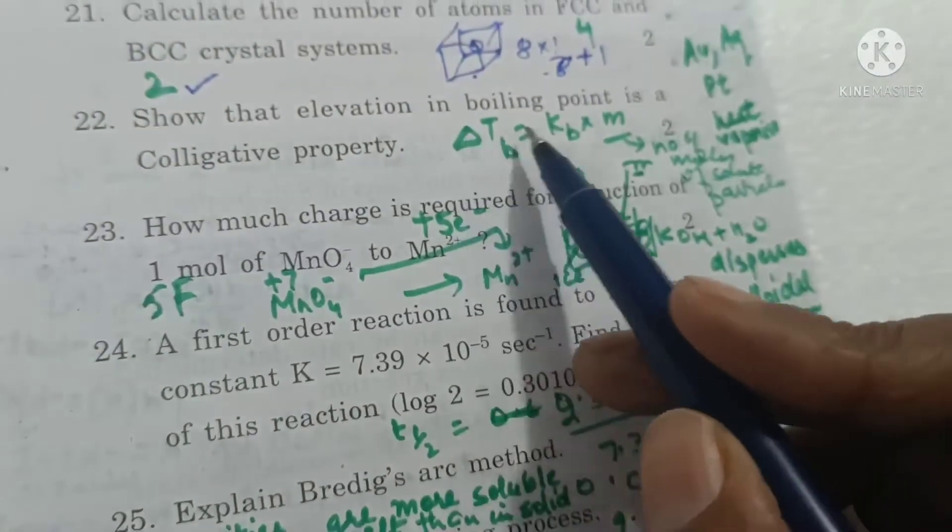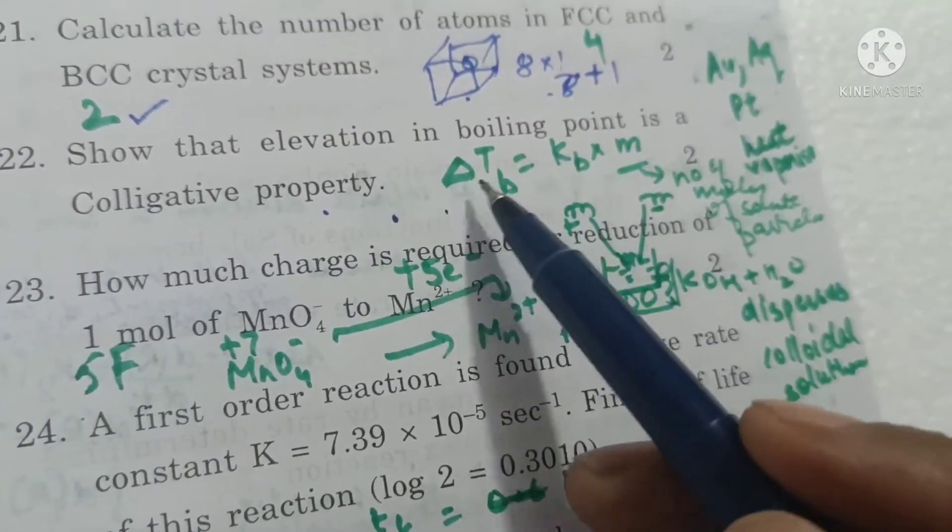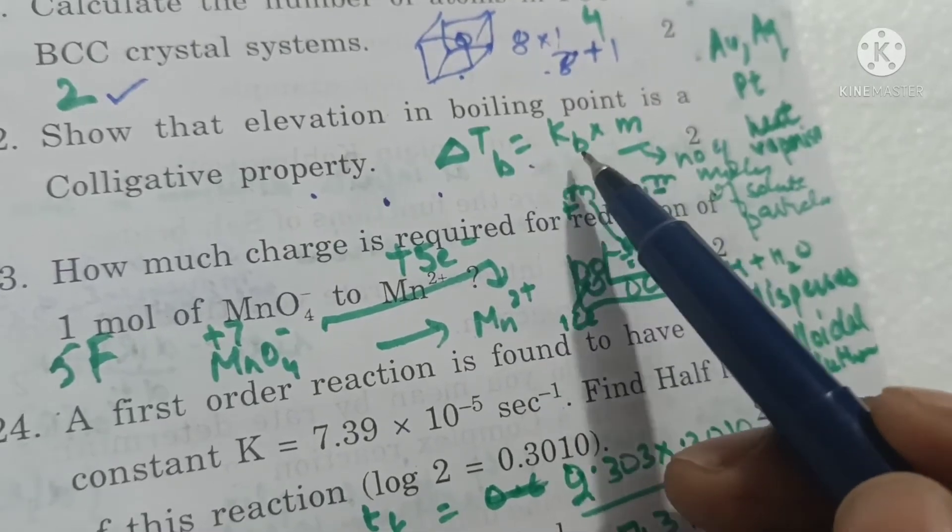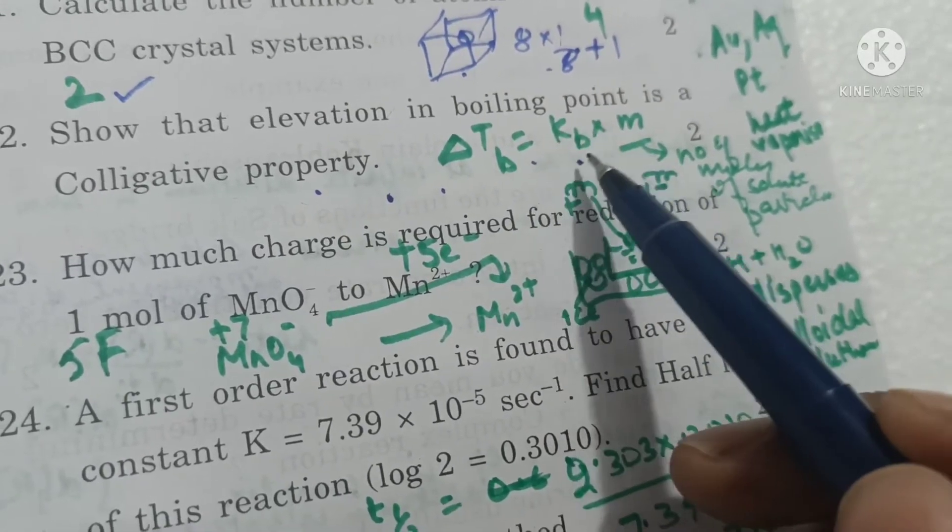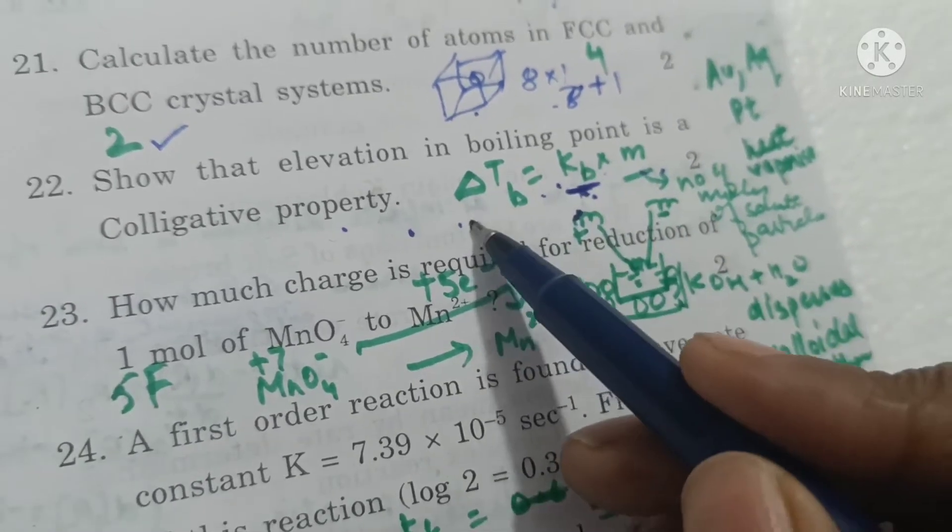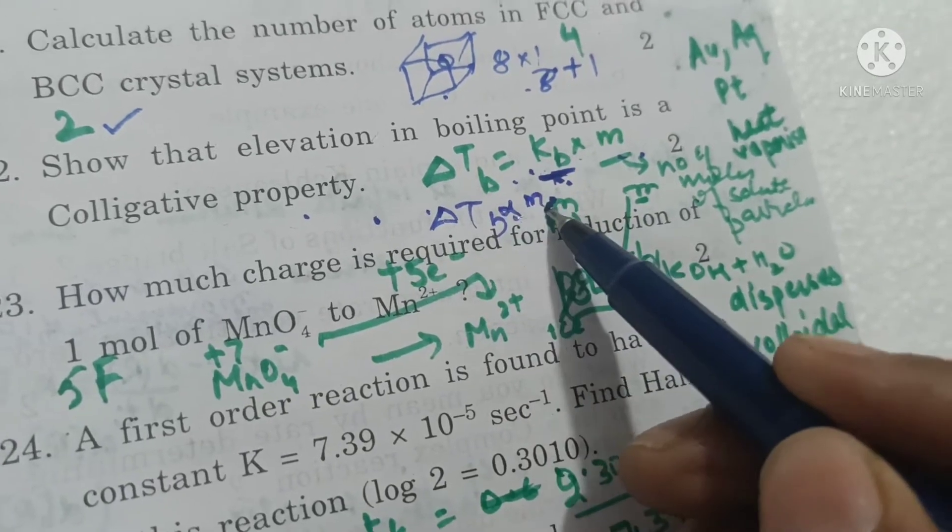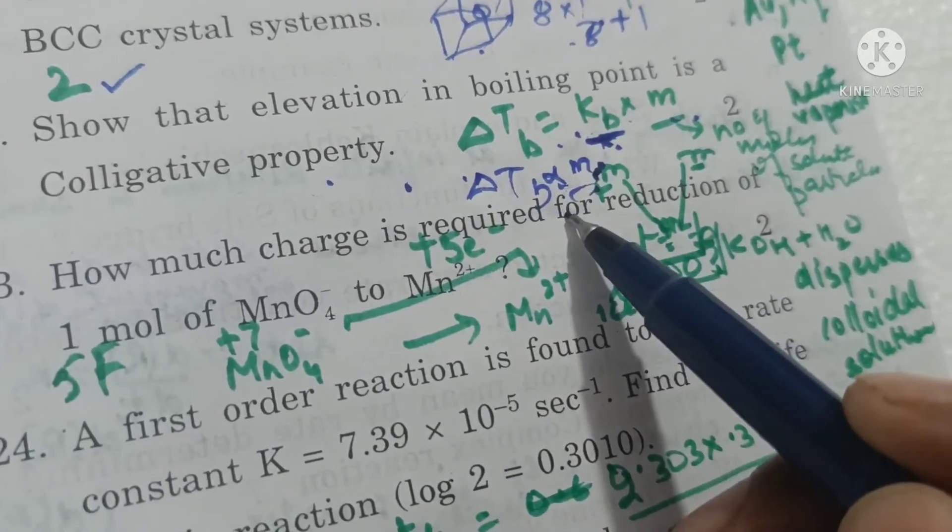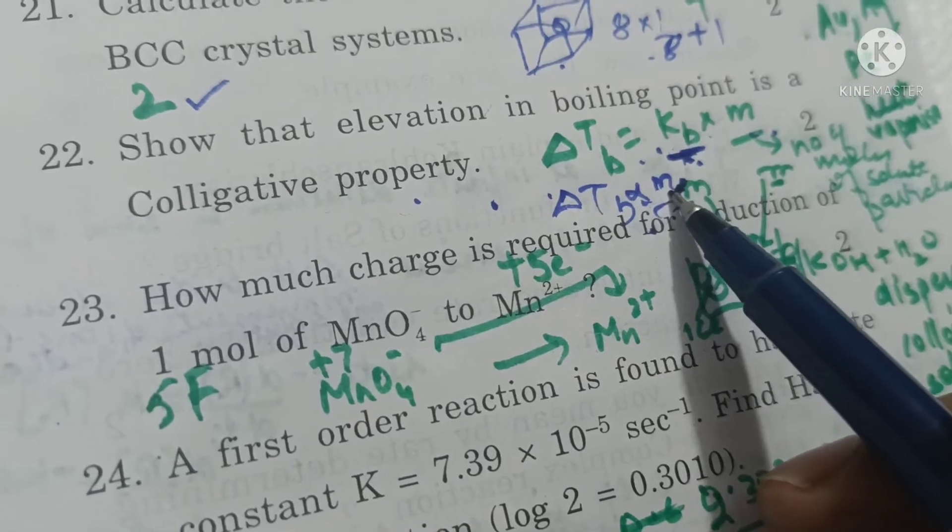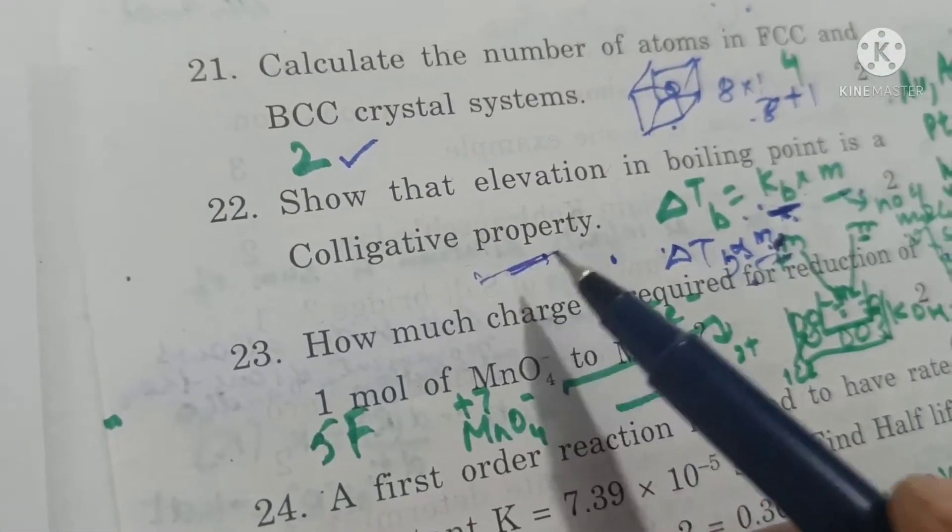Show that elevation in boiling point is a colligative property. We know that elevation in boiling point equals ebullioscopic constant Kb into molality. If we remove the constant then elevation in boiling point is proportional to number of moles of the solute. As it is proportional to the number of moles, it is a colligative property.